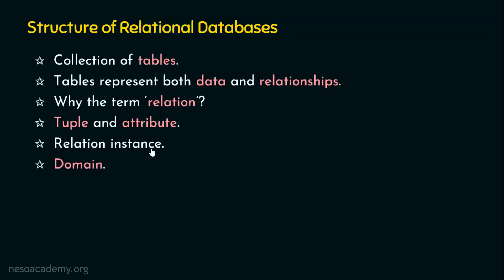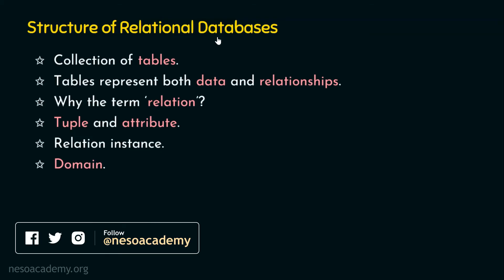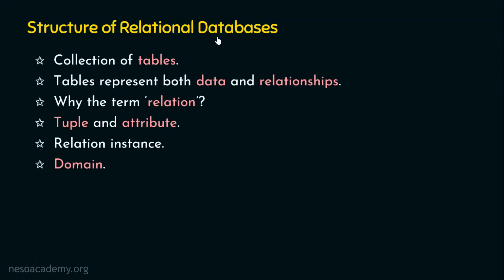The next important concept in relational databases is the domain. What is a domain? It is a set of permitted values. For example, in a banking database with only five branches — New York, Washington, San Francisco, Chicago and Austin — only these five values are permitted for the branch column. If someone tries to insert a row with the value Los Angeles, that value is not permitted because there is no such branch. That is what we call a domain: a set of permitted values.